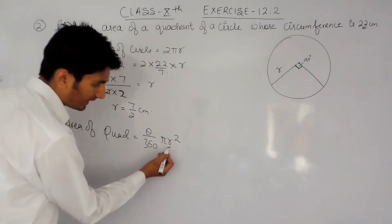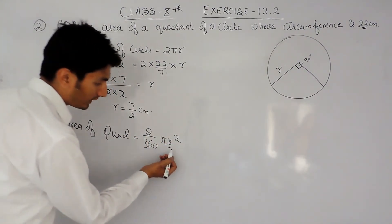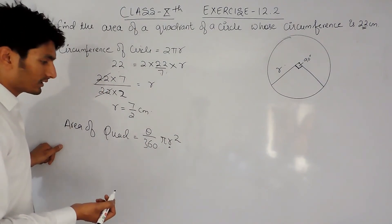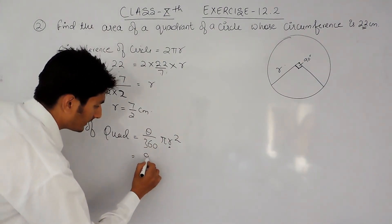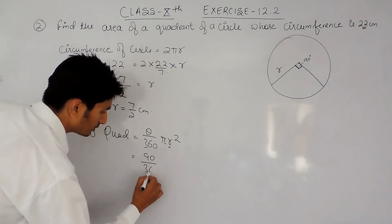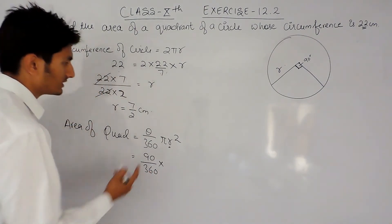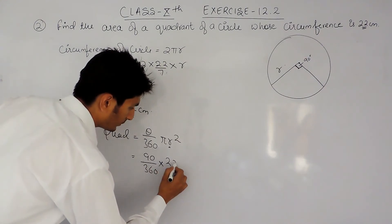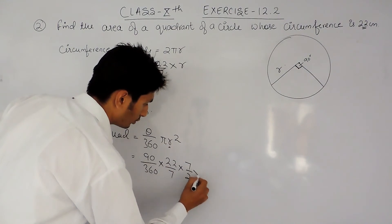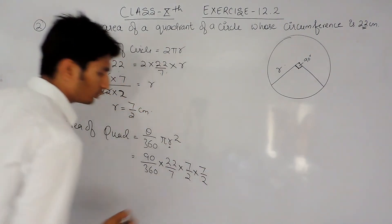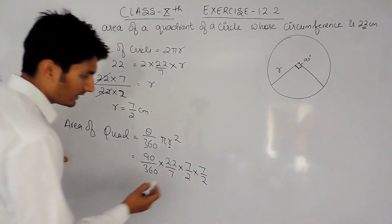Here I have to write the area of the circle. So here the central angle, or you can say the angle subtended at the center, is 90 degrees. So it will be 90/360, the value of π will be 22/7, and radius is 7/2, so radius squared will be 7/2 multiplied by 7/2.